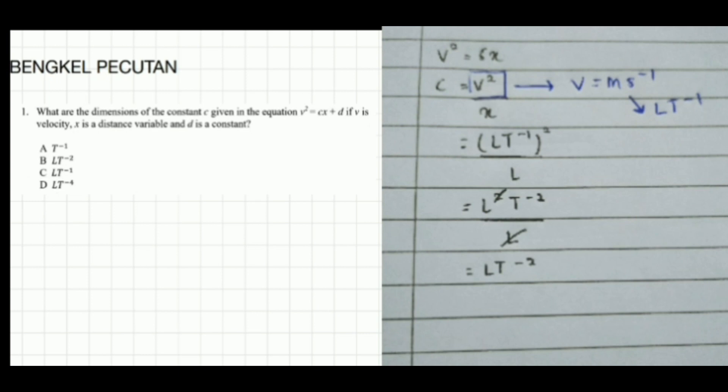At the same time, v equals meters per second, so v's dimension is L T to the negative one. X's dimension is L. So we substitute: L T to the negative one squared over L. We put the power of 2 inside the bracket, we get L squared T to the negative 2 over L.